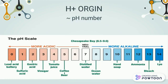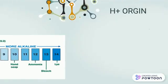The more acidic the solution, the lower the pH, and vice versa. Normal pH is around 7.35 and 7.45.